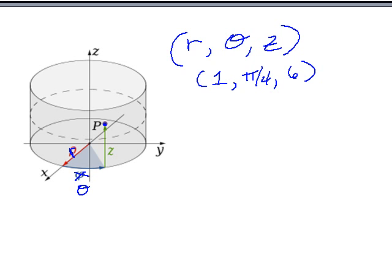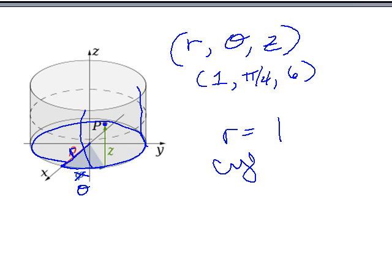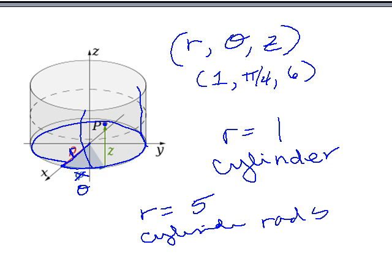Now, what happens if I constrain r? Let's say r equals 1. Well, if r is 1, that means the radius always has to be 1. But theta can take on any values. So theta could take on all the values all the way around here. And z can take on all values. This is a cylinder. Cylinder of radius 1. If I had r equals 5, that's a cylinder of radius 5.